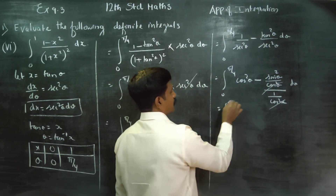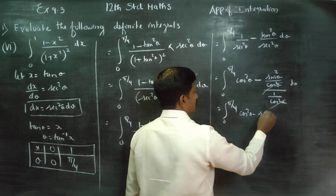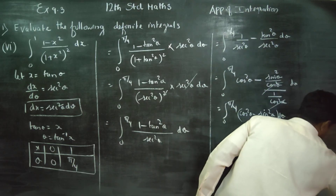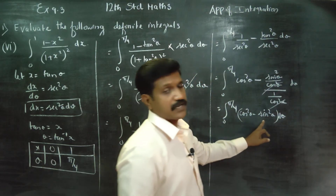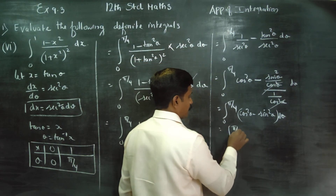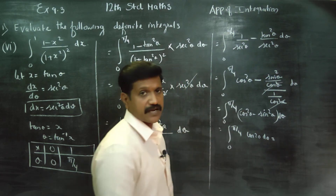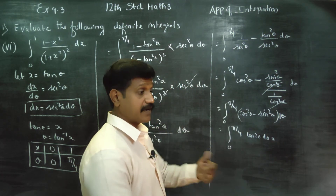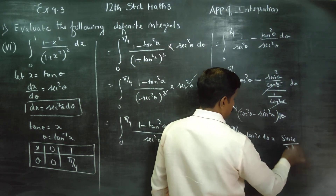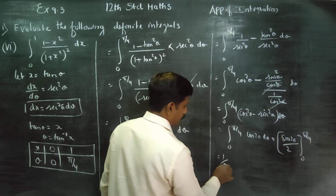Therefore, we get integration from 0 to pi by 4 of (cos square theta minus sin square theta) d theta. This is a double angle formula: cos square theta minus sin square theta equals cos 2 theta. So the integral is integration from 0 to pi by 4 of cos 2 theta d theta. Integrating cos gives sin, so we get sin 2 theta by 2, evaluated from 0 to pi by 4.